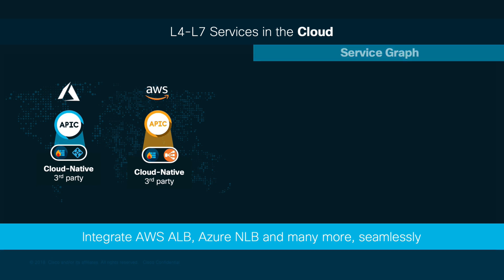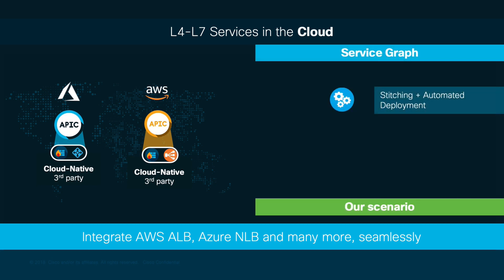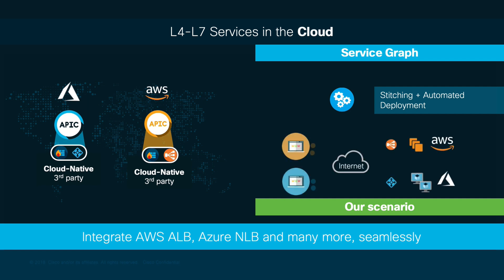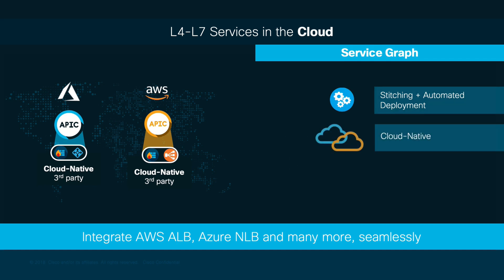Service Graph is the mechanism we're going to use to stitch external EPGs to the endpoint groups connecting the application. In this case, our app is going to be a web server. The integration is cloud-native, leveraging all the functionalities cloud environments have to offer in regards to policies and business continuity. You can also automate the integration of third-party devices such as firewalls and service load balancers.